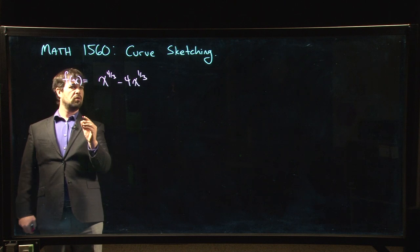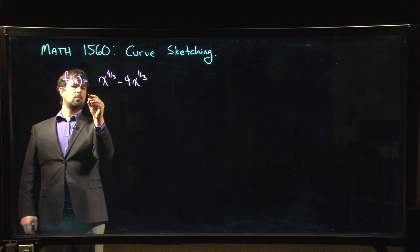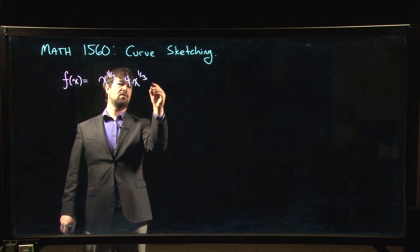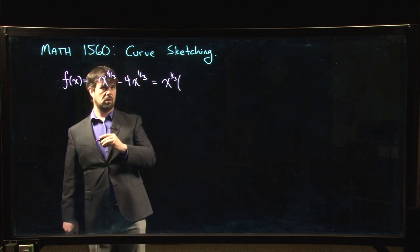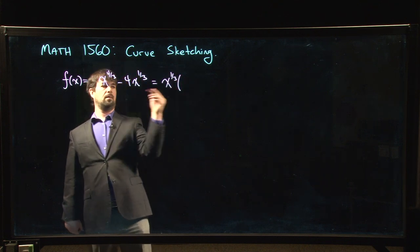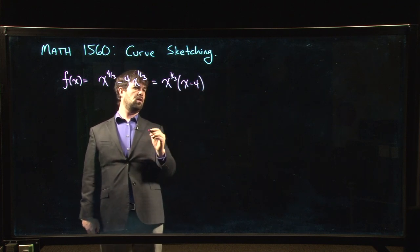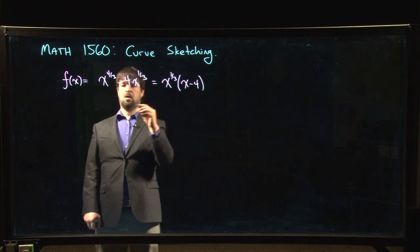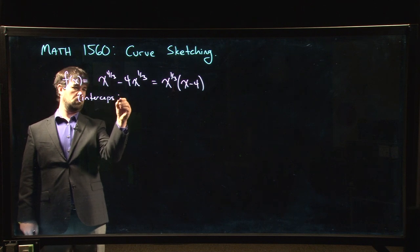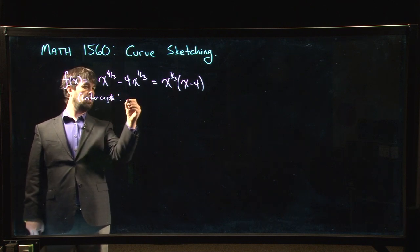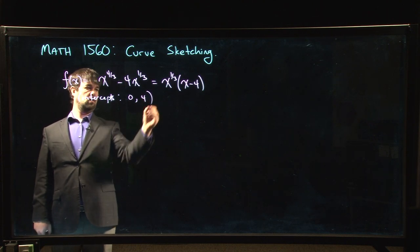Okay, so let's get the derivatives out of the way because that's a bit of work. We might do one more step with the original function which is you can actually factor out an x to the 1 over 3. This is x times x to the 1 over 3, so we get that. So now we know that we have two intercepts. We know that we have intercepts at 0 and 4 and those are our x intercepts.